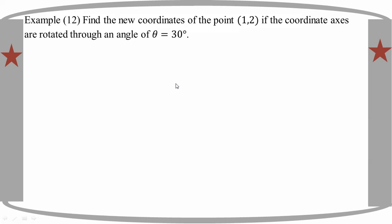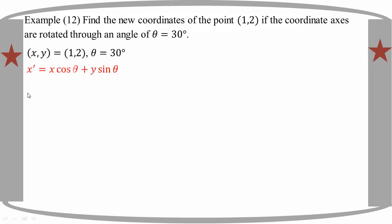If you want to see the point (1, 2), the (1, 2) is the original coordinate Y. If you want to see the original coordinate Y, the coordinate Y is rotated. You can see H prime equal to H cos theta plus Y sin theta.